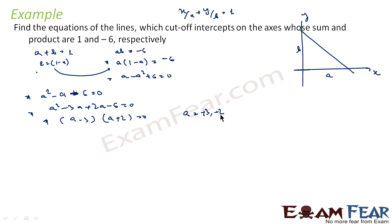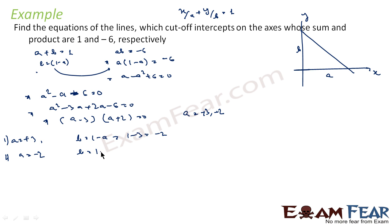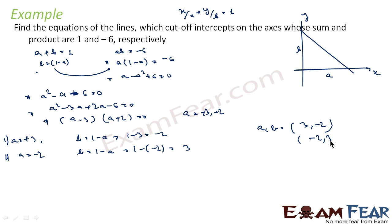Case 1: A equals plus 3, then B equals 1 minus 3, that is minus 2. Case 2: A equals minus 2, then B equals 1 minus (minus 2), that is 3. So we have two sets of values: (A, B) = (3, -2) and (A, B) = (-2, 3).